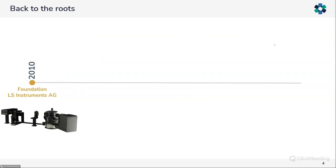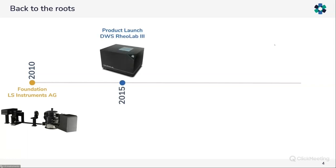Today's launch of the new LS Spectrometer somehow closes a circle in the history of LS Instruments — for us, it means back to the roots. LS Instruments started with the LS Spectrometer, which back then and even today is the most advanced light scattering instrument available on the market. As we have heard from many scientists over the years, when it comes to the hard nuts in colloidal science, they rely on the LS Spectrometer to tackle those challenges.